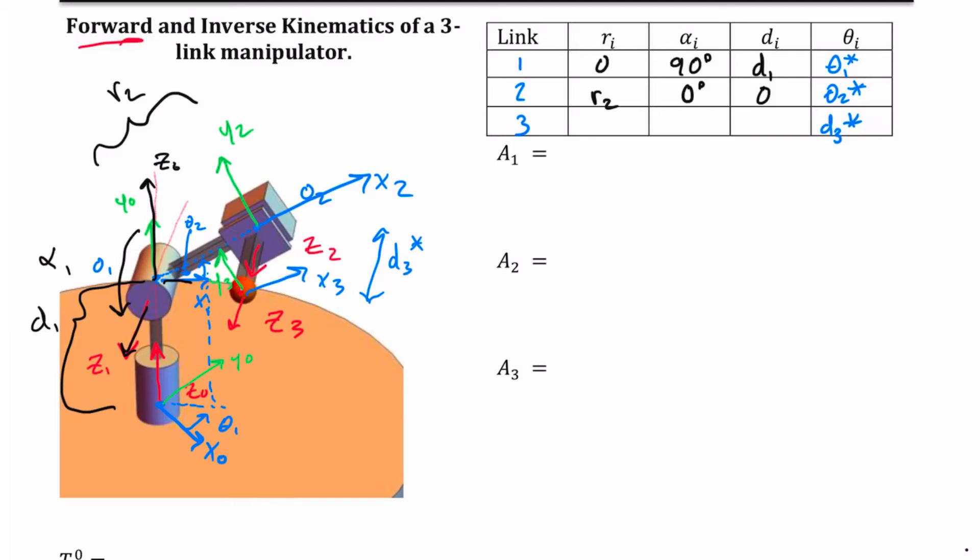Then my d3, my two frames are parallel to each other. They've just been translated. And I see that I've got a little bit of an error here. This right here is d3 star. And I've got 0 everywhere else on this. And now I have enough that I can build my A-frames.